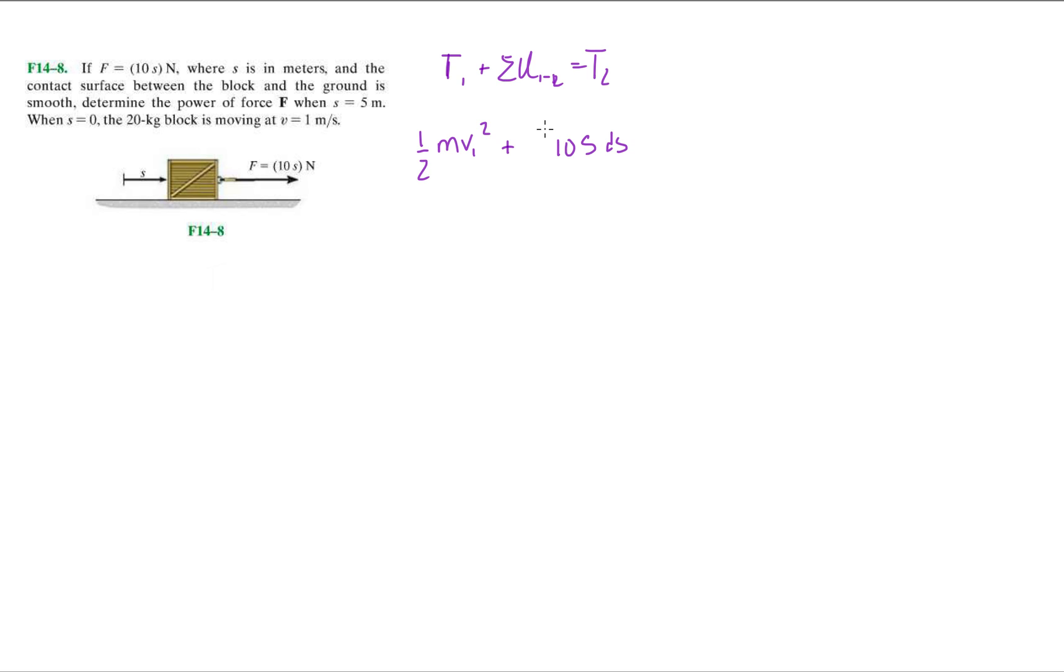So I have to write it down like this, from 0 to 5, equals one-half m v2 squared. Okay, and I'm looking for the final velocity because they want the power when s equals 5.